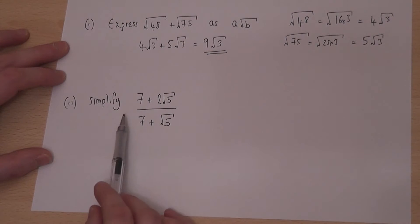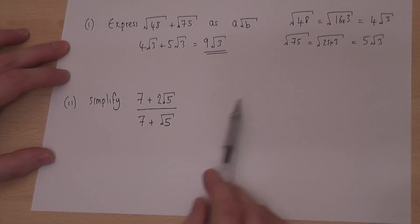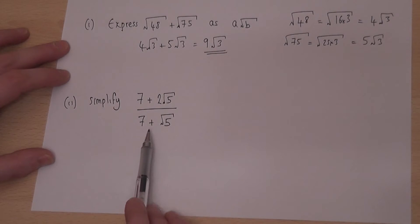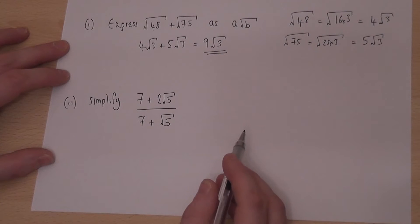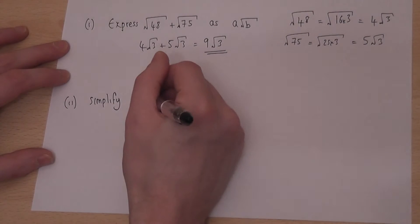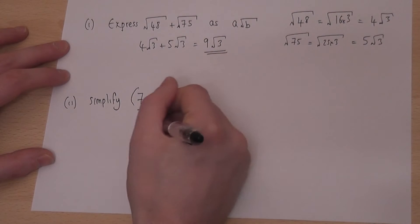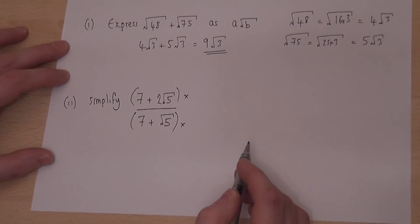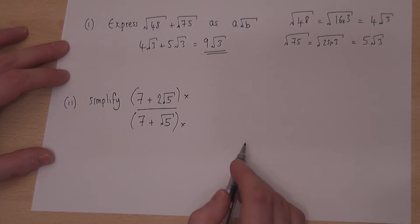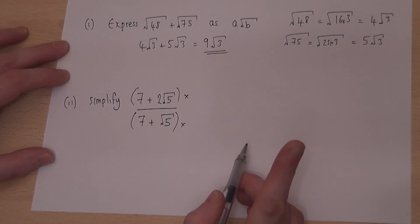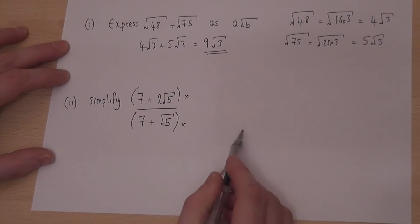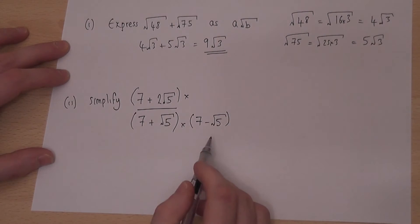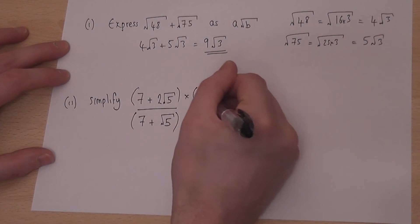The second question is a fraction involving surds with 7 plus root 5 in the denominator. The aim is to remove the surd from the bottom of the fraction. To do this we use a standard technique: put brackets on the top and bottom, then multiply top and bottom by the same number — the bottom with the sign changed, which is 7 minus root 5.